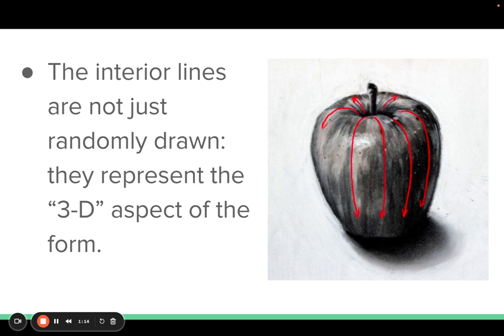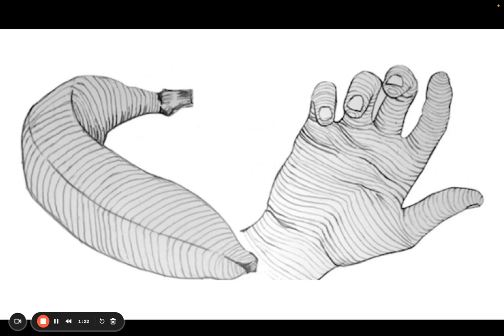The lines aren't random. They represent a 3D aspect of the form. When you look at this banana, you can see the contour lines that describe it, and then those lines that go across and down show the contour of the interior shape.